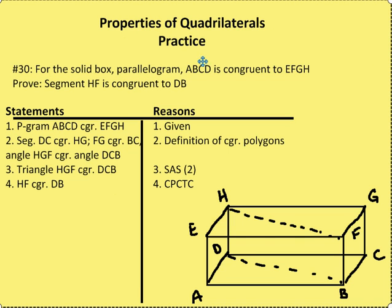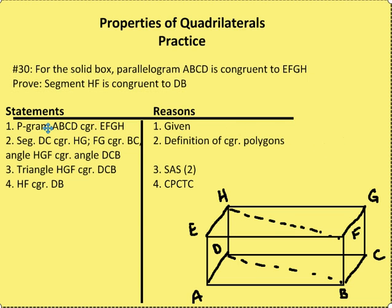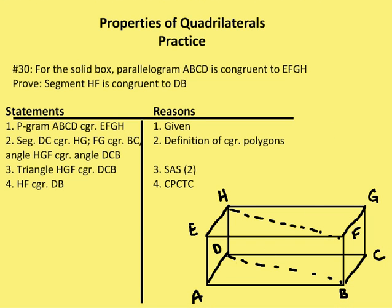For the solid box, parallelogram ABCD is congruent with parallelogram EFGH. So I shorthand this, parallelogram ABCD is congruent to EFGH. So segment DC is congruent to HG. I have GF congruent to CB. And then I have angle HGF congruent to DCB. So I have two triangles that are congruent, HGF and DCB by side angle side. So therefore HF is congruent to DB by CPCTC.